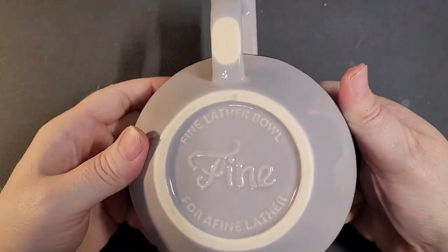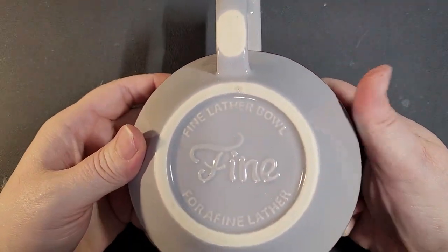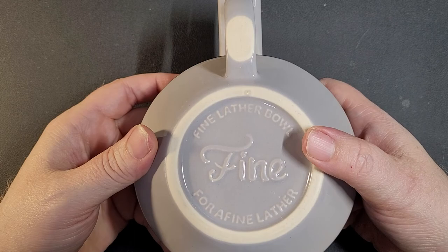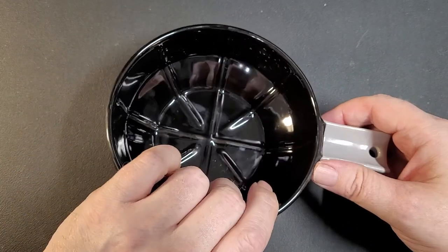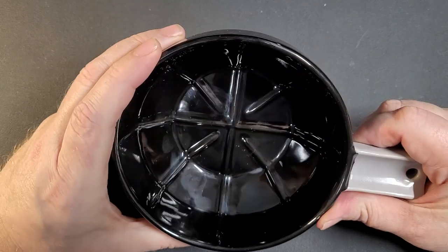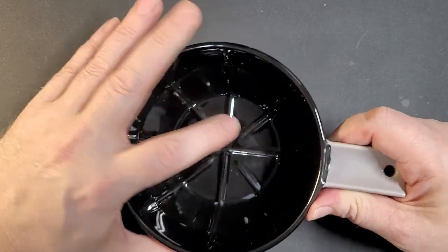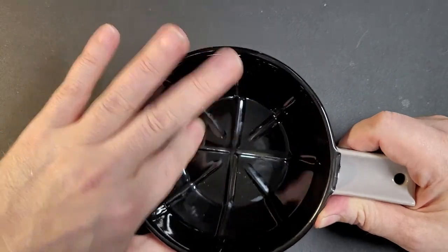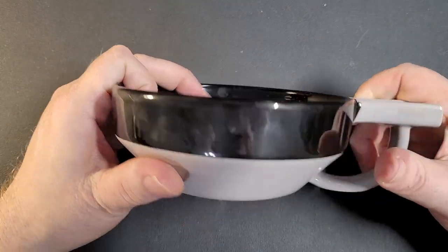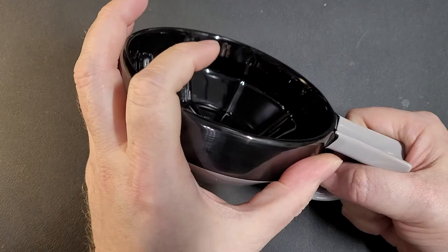It is this one, the Fine Accoutrements ceramic lathering bowl. I chose the one in black and gray. You'd think I'd have got a blue and gray one though, people gonna think I'm an Oakland Raiders fan, but I'm not. I just thought this looked pretty cool, and because of my low vision I really like the contrast.